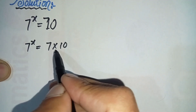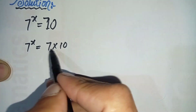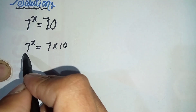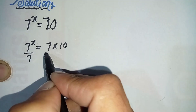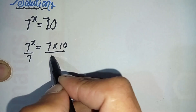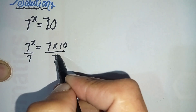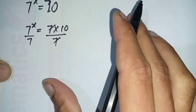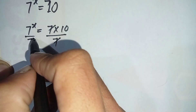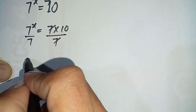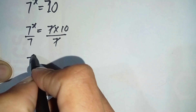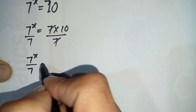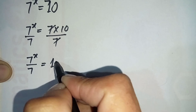Now in the next step we will divide both sides by the number 7 to eliminate it from the right hand side. So from the right hand side, this 7 and this 7 will be cancelled with each other. This equation will become 7 raised to the power x divided by 7 is equal to 10.